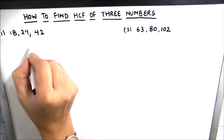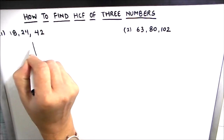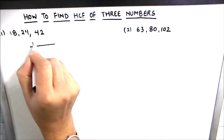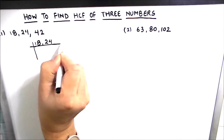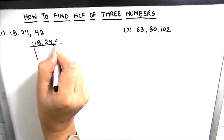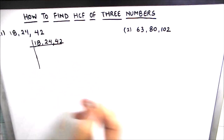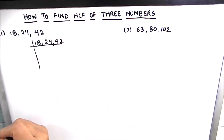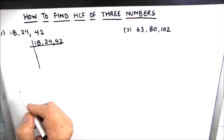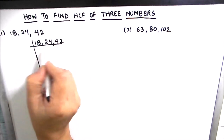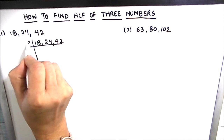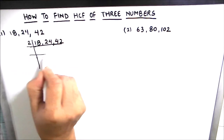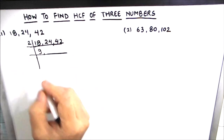Let's start with the first example. The three numbers are 18, 24, and 42. We'll use the prime factorization method first. We write the three numbers and divide only by the common factor — a factor which divides all three numbers fully without leaving a remainder. Since all three numbers are even, 2 is a common factor.